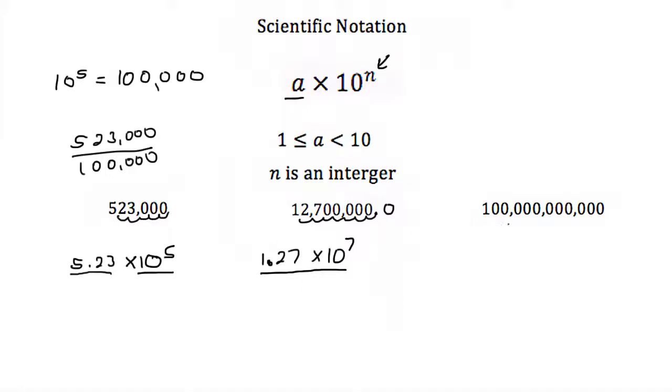If we wanted to write 100,000,000,000 in scientific notation it would be 1 times 10 to the 1, 2, 3, 4, 5, 6, 7, 8, 9, 10, 11. So 100,000,000,000 is 1 times 10 to the 11th.